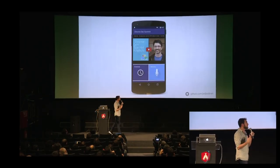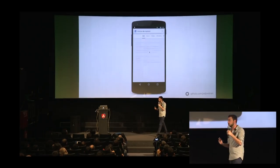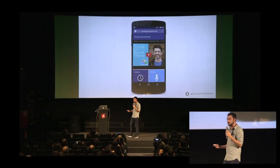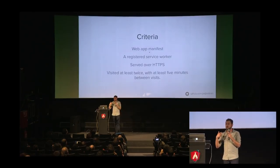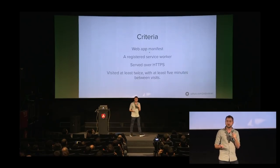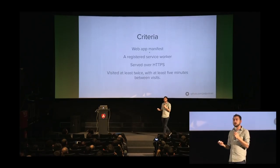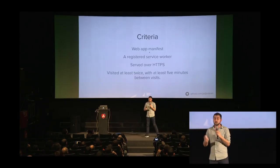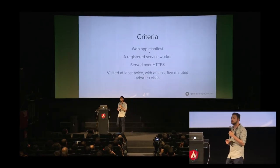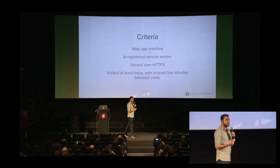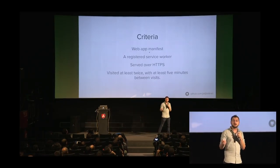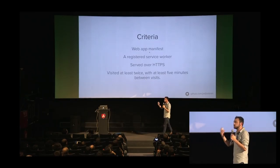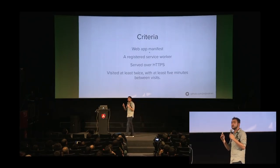The browser automatically asks if users would like to add the app to their home screen — a nice feature to increase engagement. But the browser won't ask for every single website; there are specific criteria. First, you need a web app manifest so the browser knows what name and icon to suggest. You should also have a registered service worker, and ideally your app should work offline. You must also serve it over HTTPS — service workers don't work on HTTP, to prevent man-in-the-middle attacks controlling the network.